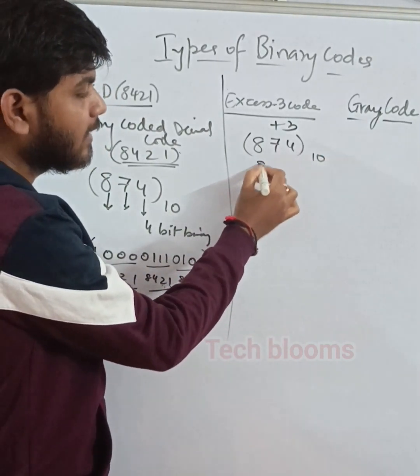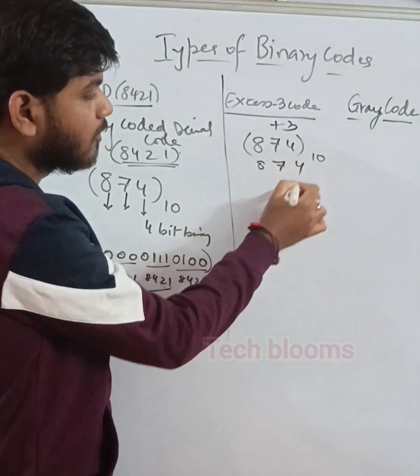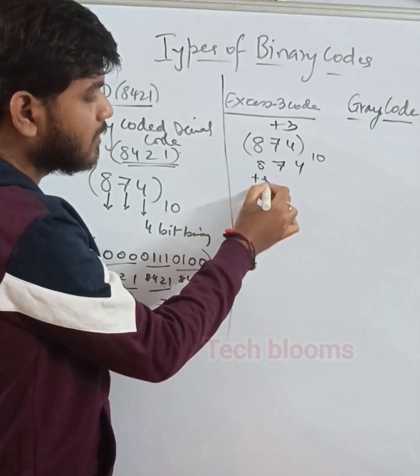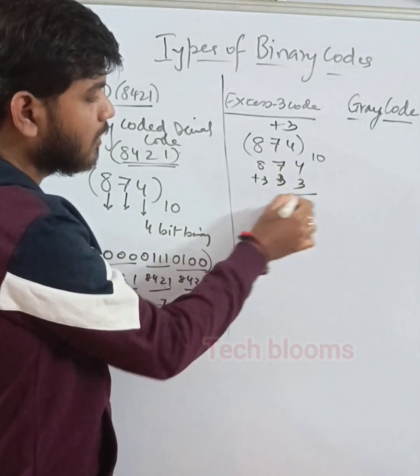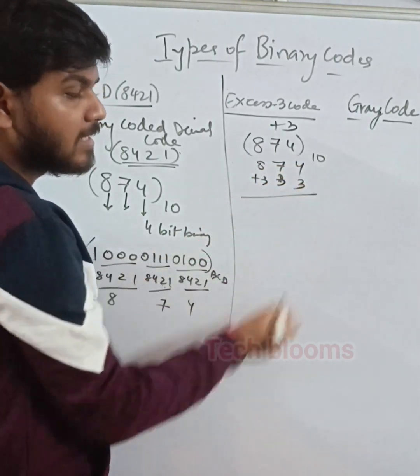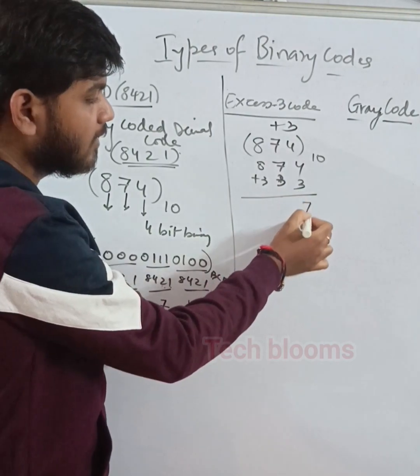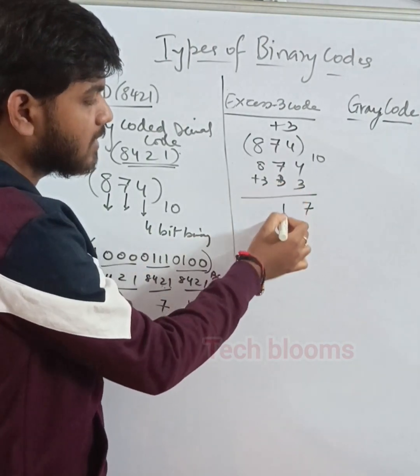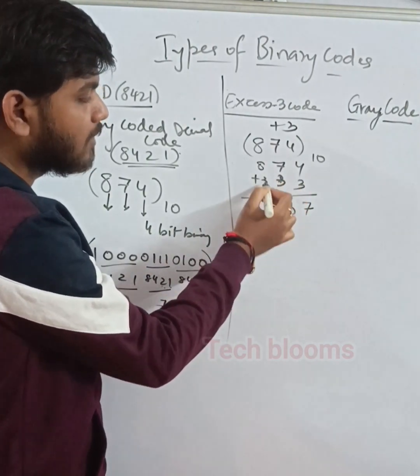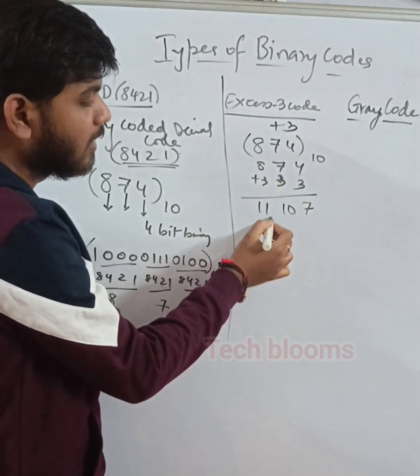You can do directly: 8 plus 3, 7 plus 3, 4 plus 3. So 4 plus 3 is 7, 7 plus 3 is 10, and 8 plus 3 is 11.